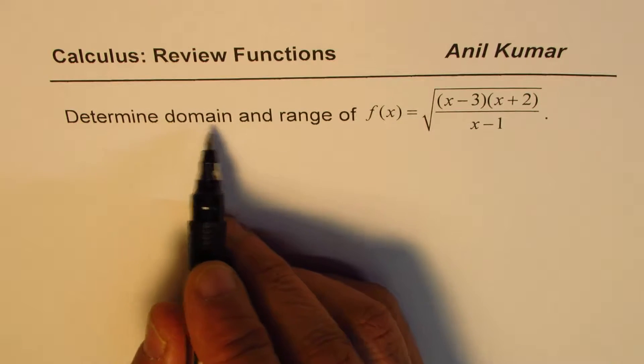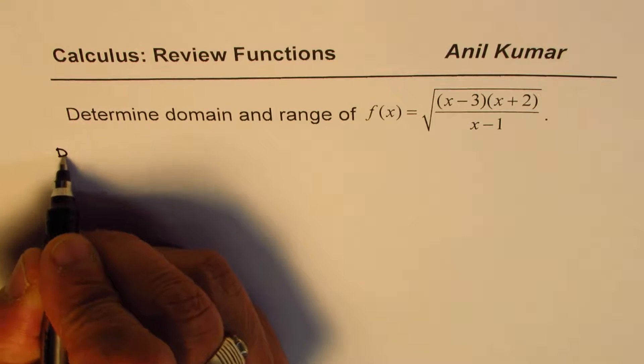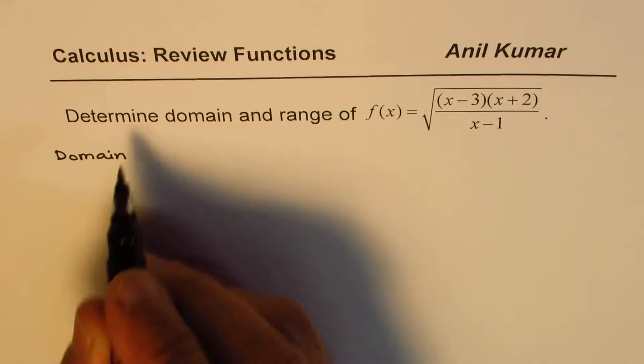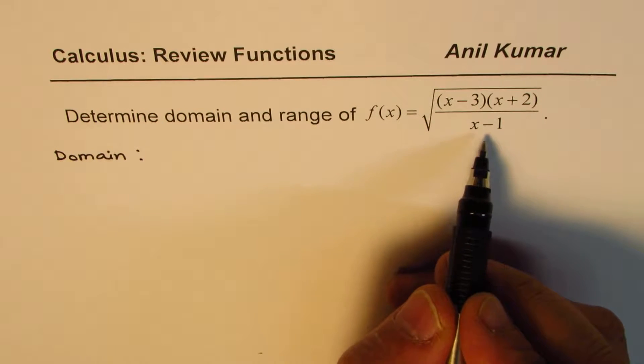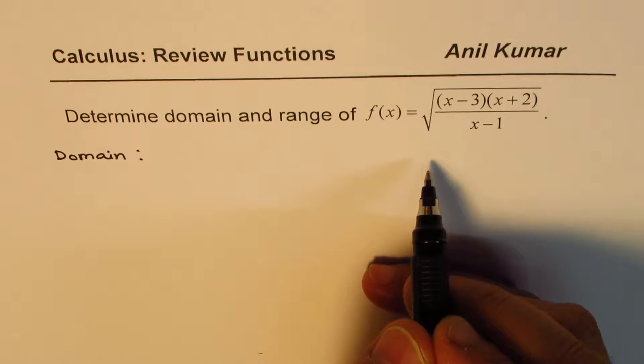Let's begin by finding domain of this function. So as you can see, the denominator has a restriction. It can never be 0. So when we are considering domain, what we have is that this function cannot have x equals 1.